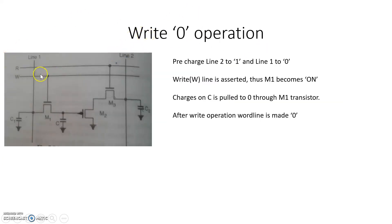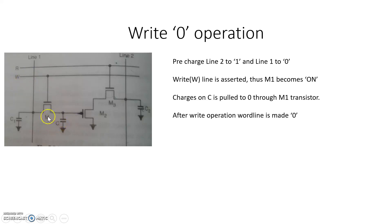To perform the write-zero operation, we make line 1 equal to zero and line 2 equal to Vdd, so voltage on C1 is zero and on C2 is Vdd. We activate the W line, turning on M1, and the cell capacitor C discharges through this path to zero. We then deactivate the W line — M1 becomes an open circuit and the zero voltage on the capacitor is retained.